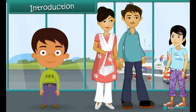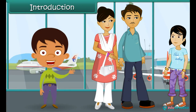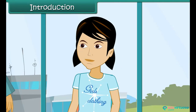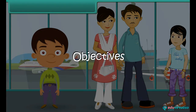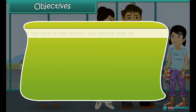Shika and her parents are at the airport to board a plane to Mumbai. Her parents have promised her a ferry ride to the Elephant Caves during their stay. Their return journey is booked on a train. Shika is thrilled she gets to use three modes of transport in a single trip to Mumbai.